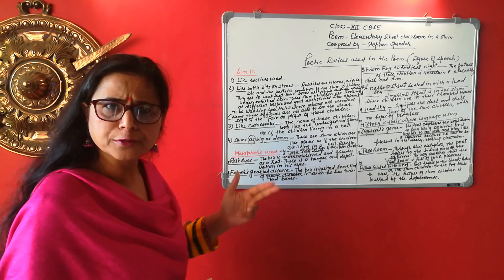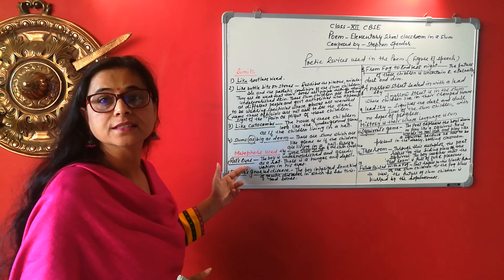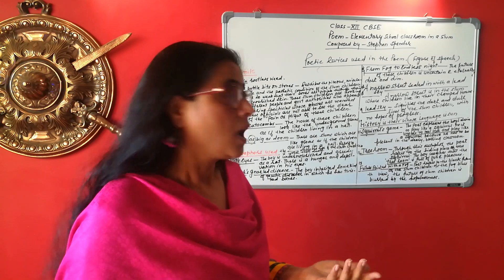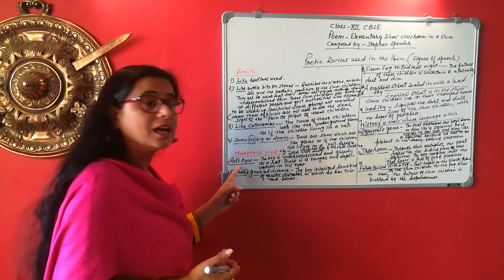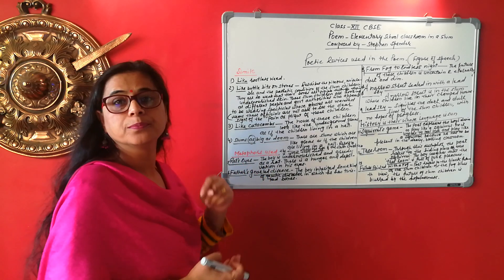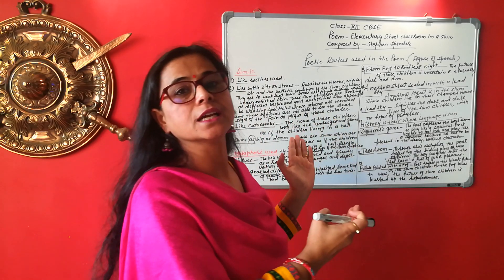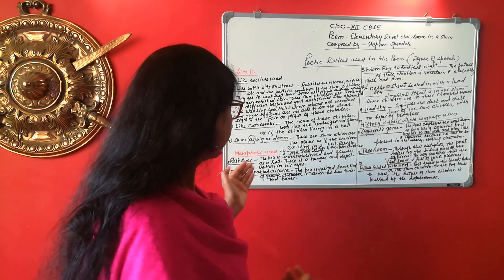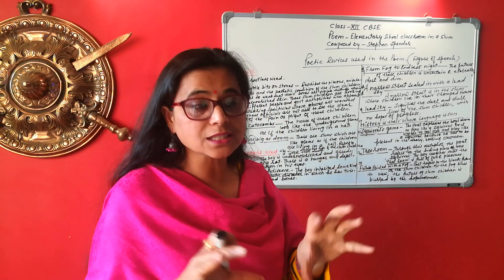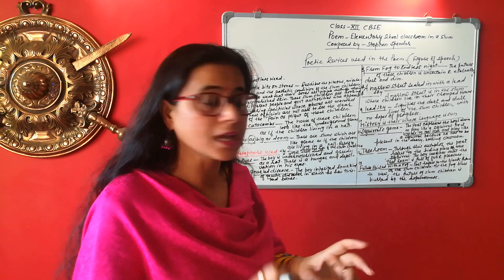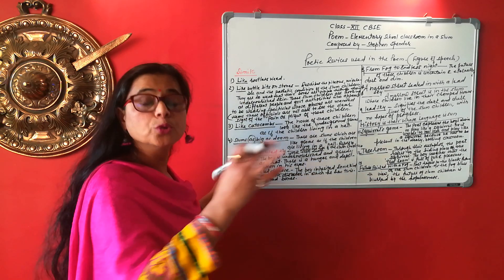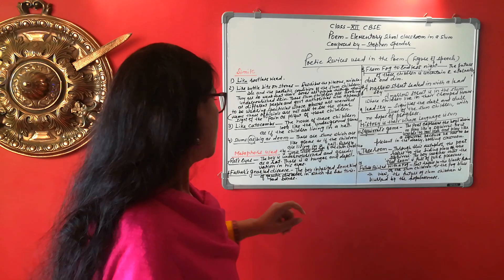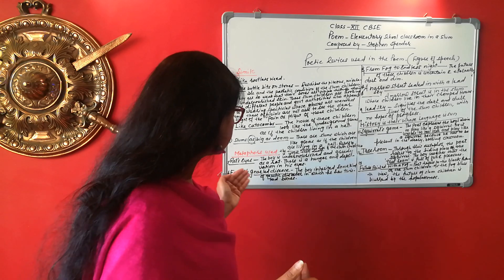At different places, metaphors are used. The first example of metaphor is 'rat's eyes.' The poet describes a child in the classroom who has curious eyes just like a rat. Rather than focusing on what is being taught, this child is looking here and there — very curious, just as a rat that keeps looking around when it enters your house. Because he is hungry, he is not able to concentrate in class. There is hunger and deprivation in his eyes.